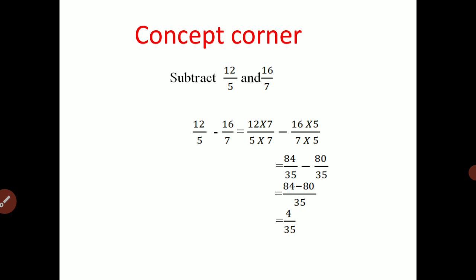The LCM of 5 and 7 is 35. So 12 into 7 is 84, and 5 into 7 is 35, giving 84 upon 35. Then 16 into 5 is 80, and 7 into 5 is 35, giving 80 upon 35. So 84 upon 35 minus 80 upon 35 equals 84 minus 80 upon 35, which equals 4 upon 35. That is the answer for 12 upon 5 minus 16 upon 7.